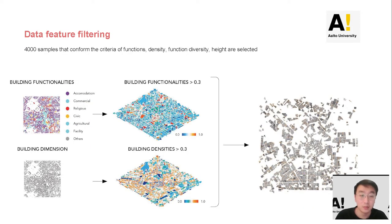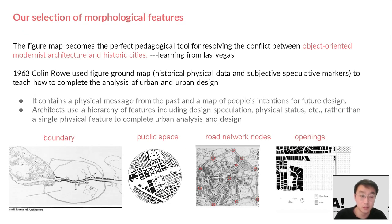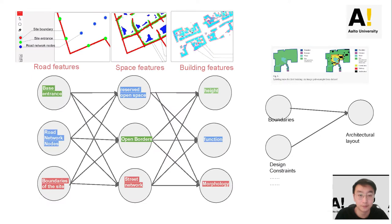We select the number of building functions, height, and building density as the selection standard for sampling. We then get 400 urban plans as data samples, and we verify whether the GAN results meet our inspection criteria. We ultimately select features containing both physical site constraints and subjective speculations of the architect, drawing from Cullen's figure-ground method and learning from Las Vegas. Compared with previous methods, instead of a single layer of input and output, we built a network of layers of architecture features: nodes of rows, boundaries, openings, open space, and so on.